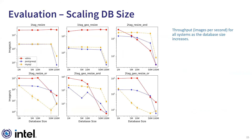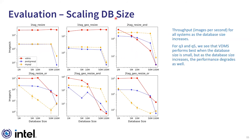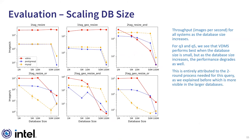Our next evaluation focuses on the performance of VDMS and the two baselines as the database size increases in terms of number of images. For Query 1 and Query 2, VDMS delivers higher throughput compared to the baselines, and this improvement is maintained as the size of the database increases. For Query 3, VDMS performs best with 1 million images but performance degrades as the database size increases, with MySQL outperforming VDMS for databases larger than 1 million. This also occurs in Query 5 but only for databases larger than 10 million. The degradation is attributed to the turnaround process needed for this query.